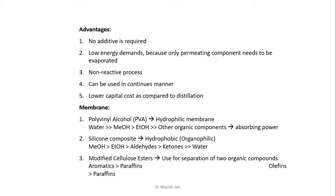The second type are hydrophobic membranes, which have higher affinity towards organic compounds. You can use this type of membrane to separate organic compounds from water — for example, if you have water containing small amounts of organic impurities like alcohols, aldehydes, ketones, or phenols, you can remove these using silicone-type membranes. These organic compounds will permeate selectively through the membrane and then vaporize on the permeate side.